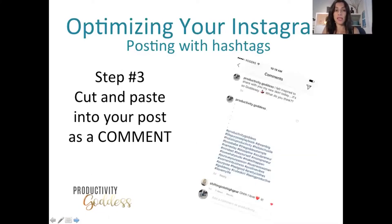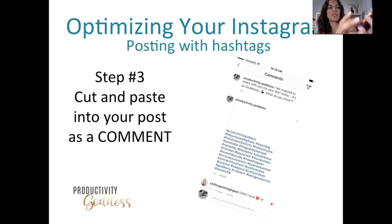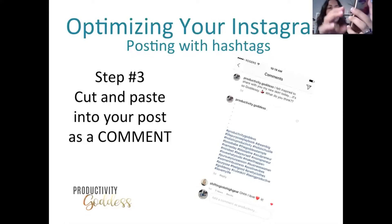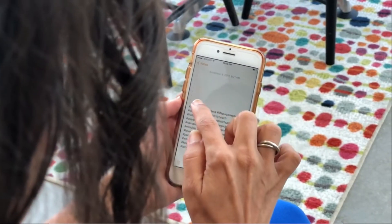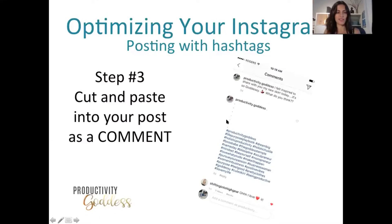Step three is to cut and paste your hashtags into your post as a comment. Go into your Instagram — here's my Productivity Goddess Instagram — and after you create a new post, be the first person to comment. Go to the comment button, click that, and then cut from your notes and paste right in there so you become the first to include all those hashtags and people can find you right away. Here it is with all the dots — dot, dot, dot — and then all the hashtags below.